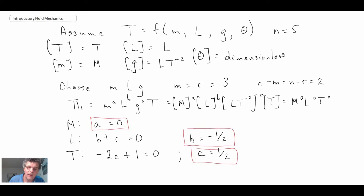So those are the coefficients within our pi 1 term, the first non-dimensional group that we're deriving. And so what we find is that pi 1 can be expressed in the following manner.